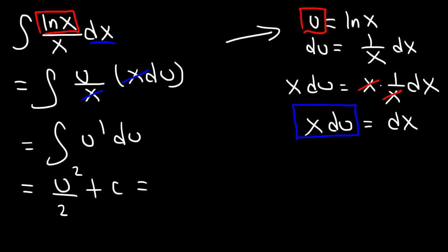Now our next step is to replace u with the natural log function, and so it's going to be (ln x) squared over 2 plus c, and that's it.